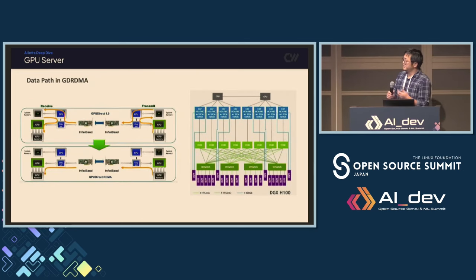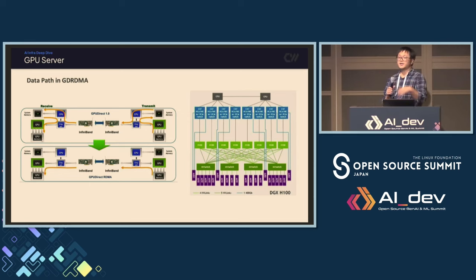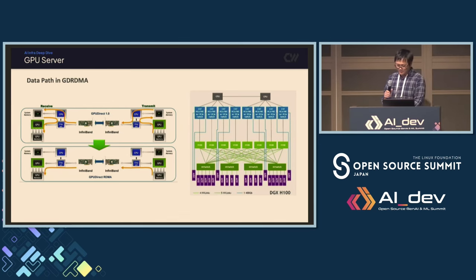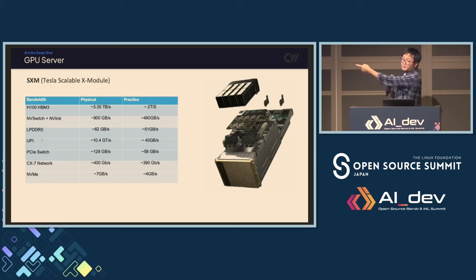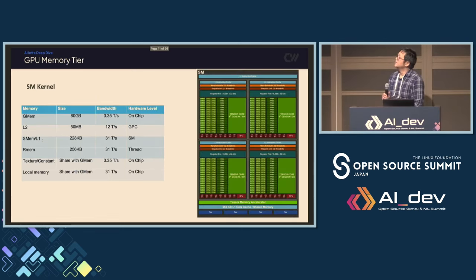If everything stays in the GPU, that's the fastest path — perfect. If GPUs need to communicate with each other, NVLink handles that at 400–500 GB/s, which is still good. But if they need to cross nodes, they need the network — which drops to 400 Gb/s. That's where the bottleneck shows up. If you do something wrong and data has to go through NVMe storage, it's super slow. If it has to cross NUMA nodes via UPI, it slows down. We want to keep data on the fastest path: GPU memory and NVLink, minimally going to CX7 network with GPU RDMA — not involving anything else.